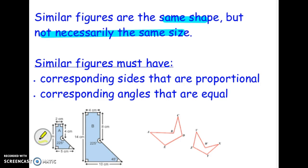To be similar, figures have to have two things happen. One, they have to have corresponding sides that are proportional, and two, corresponding angles that are equal.